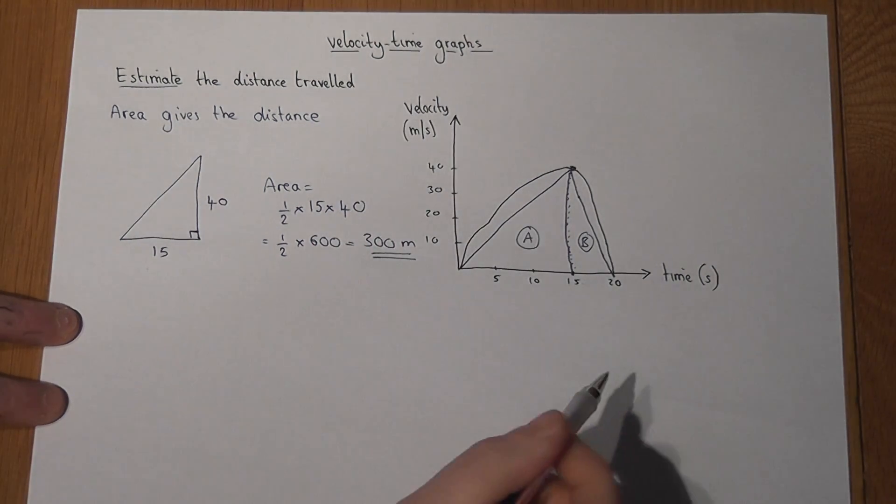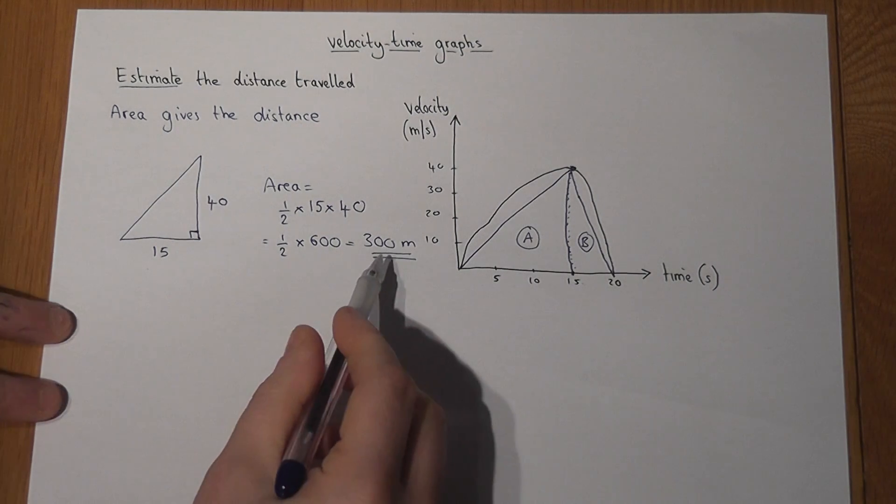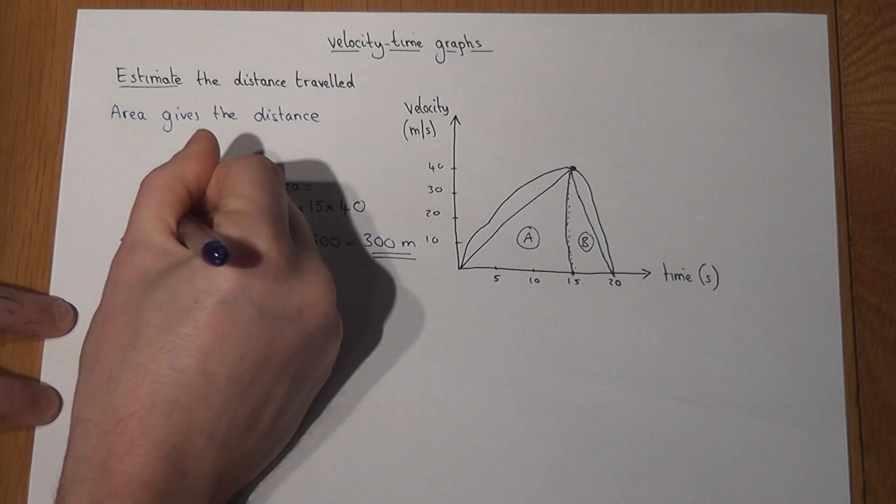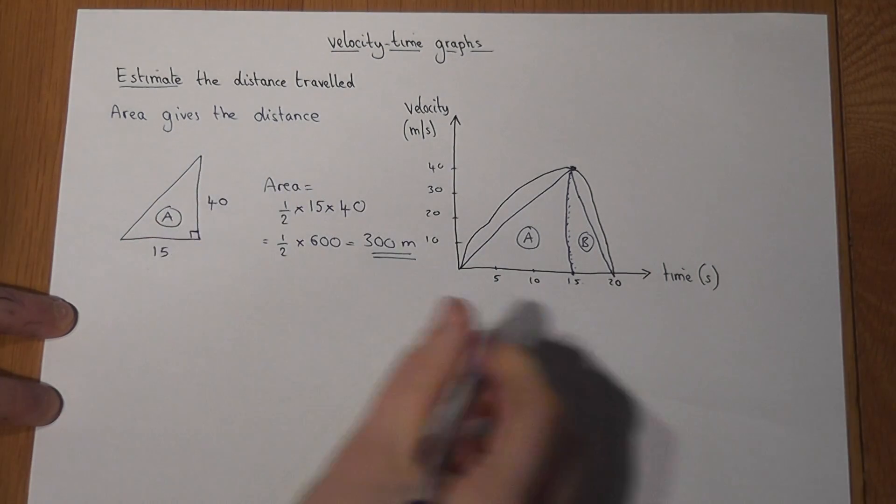In the first 15 seconds this person goes roughly 300 metres. That was triangle A, and now we have triangle B.